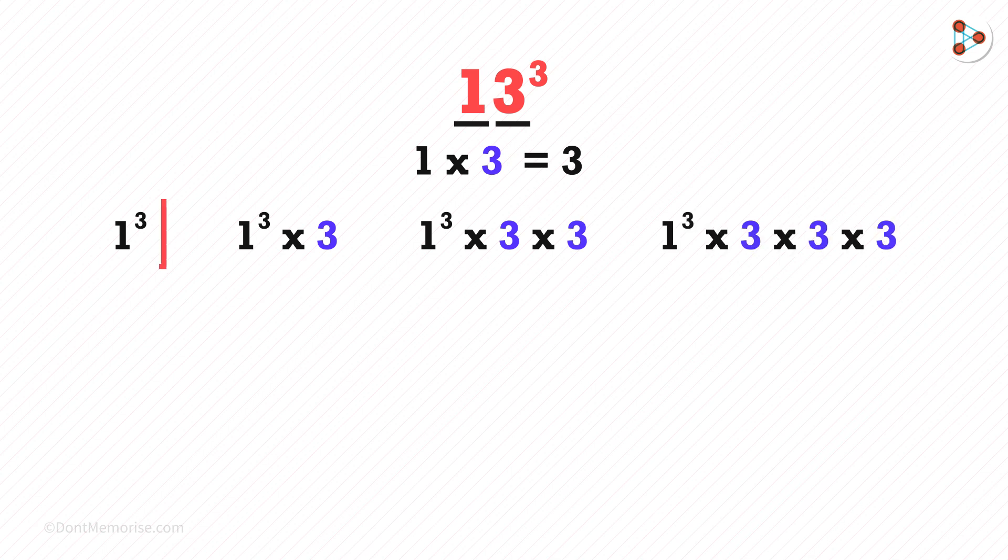So we get four parts. The answer of 1 cubed is 1. The answer to this is 3. For this it's 9, and for this it's 27.